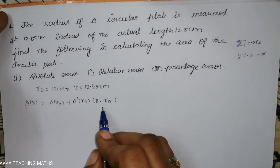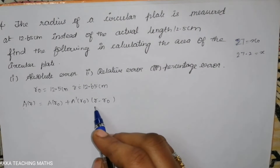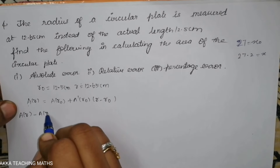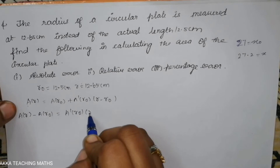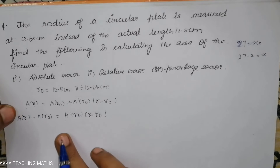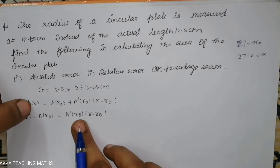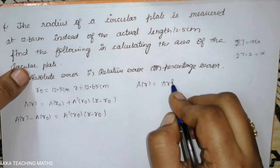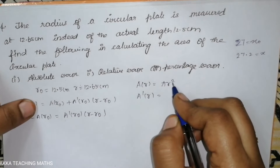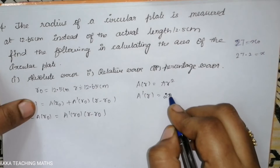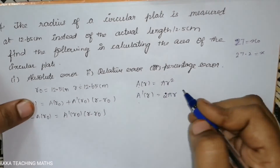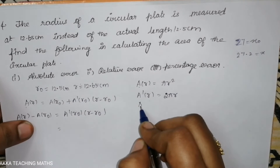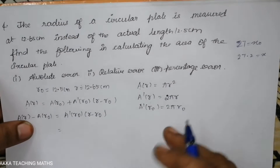This is the linear approximation. The approximate value is: A(r) ≈ A(r0) + A'(r0) × (r − r0). Now we find A(r): the area of the circular plate is pi r square. Differentiating, A'(r) = 2πr, so A'(r0) = 2π r0.